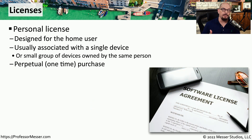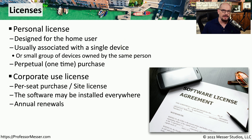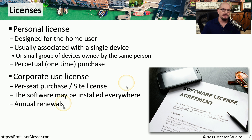Perpetual licenses are very common when purchasing a personal license, designed for home users who would not commonly purchase an ongoing annual license. This is often a license associated with a single device or a group of devices used by a single person. Corporate environments need more flexibility, and in many cases can use a per seat license or even a site license used for everybody at that location, often with annual or multi-year renewals.